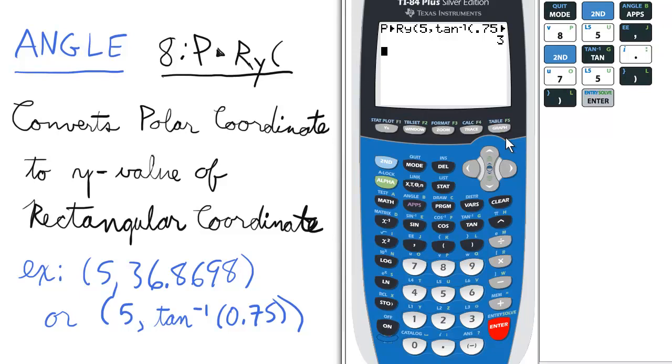We should have 3, so this means 3 is the Y value. Now paired with the X value we did in the lesson before, this means that the equivalent rectangular coordinate is 4 comma 3.